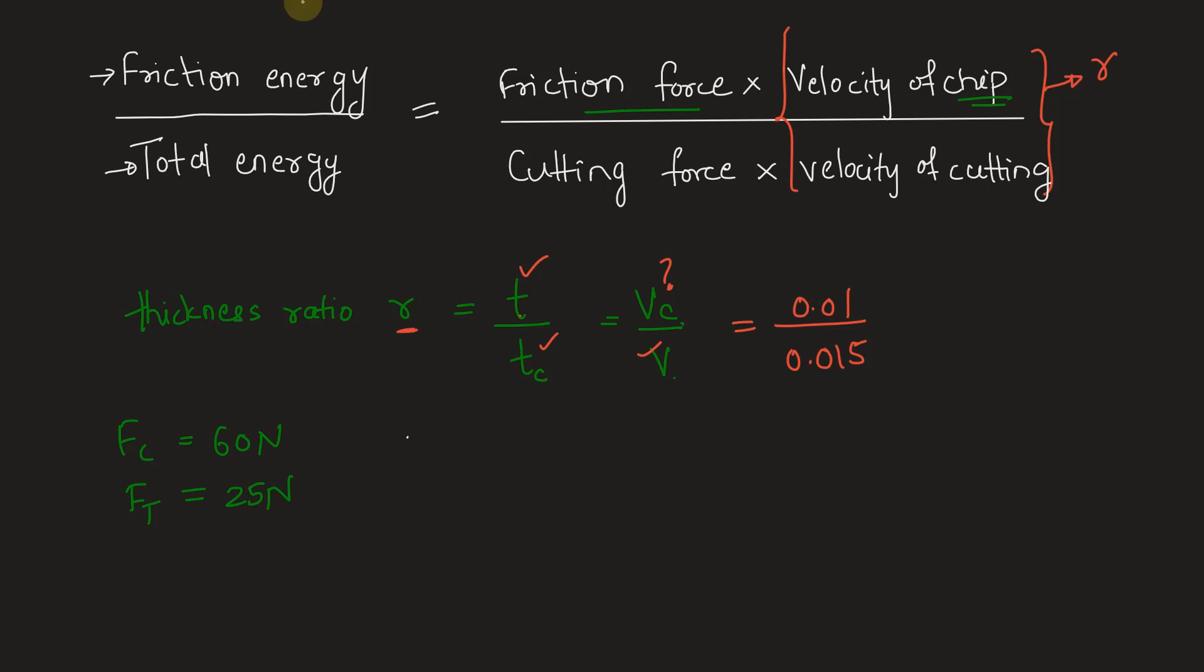Using merchant analysis from the merchant circle diagram, we have the relationship for friction force. Friction force F equals cutting force Fc times sin alpha plus thrust force Ft times cos alpha, where alpha is the rake angle which is 15 degrees.